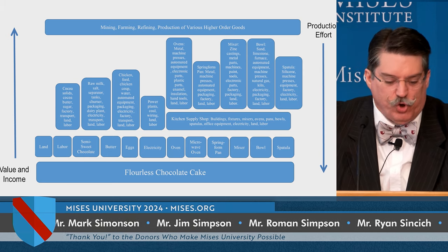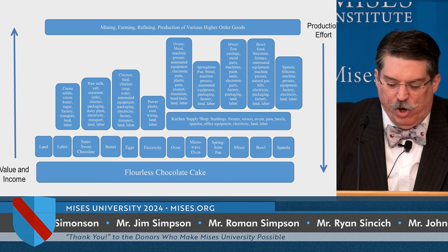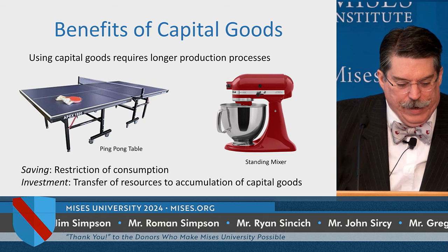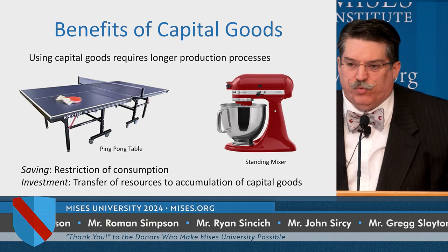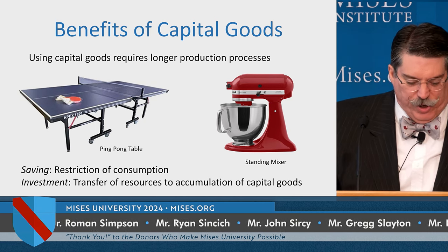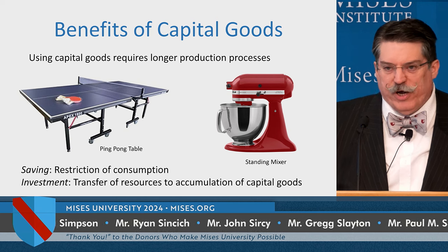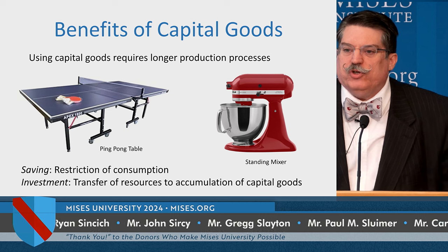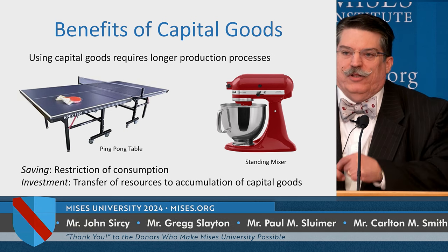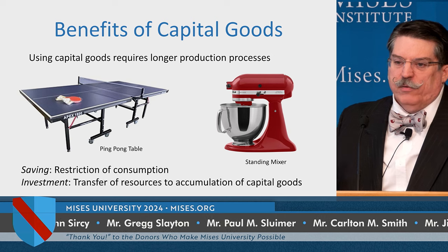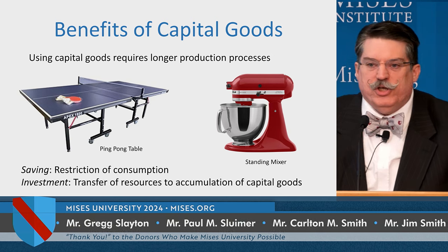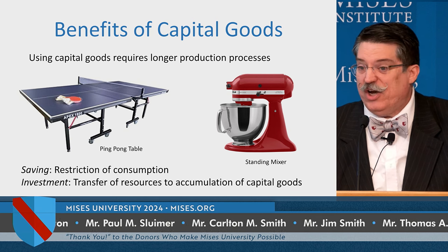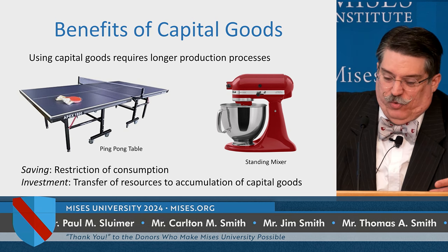The complex production structure is made possible only by the use of capital goods. And using capital goods, as we have seen, requires longer production processes. By longer production process, it means we have to wait before we get certain consumer goods. We have to be willing to lengthen the entire production process to get more of what we want.